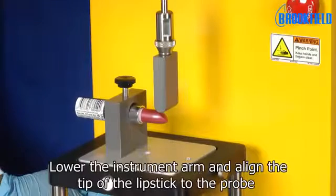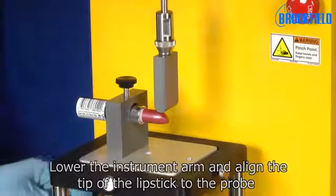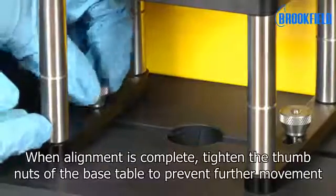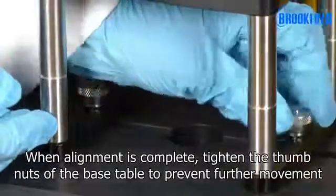Lower the instrument arm and align the tip of the lipstick to the probe. When alignment is complete, tighten the thumb nuts of the base table to prevent further movement.